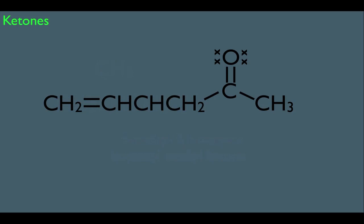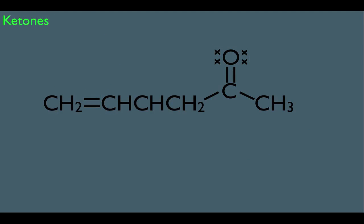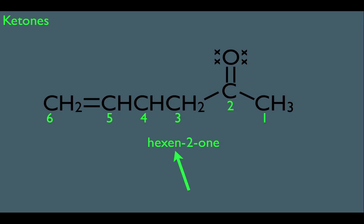What if you have a ketone and an alkene within the same molecule? We have the carbonyl group and a double bond. Looking at nomenclature priorities, ketones are number 6 and alkenes are number 9, so the ketone has priority. The numbering goes in the direction that gives the ketone priority. The parent name is hexenone — the -one suffix is because of the ketone, and the carbonyl is on carbon 2. The -en tells us we have an alkene, and we specify where the double bond is: it starts at carbon 5. So this molecule is 5-hexen-2-one.